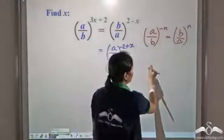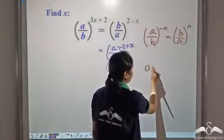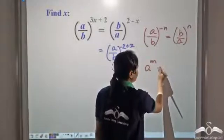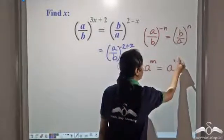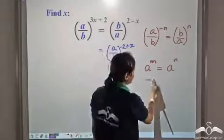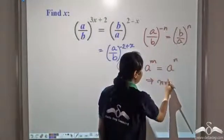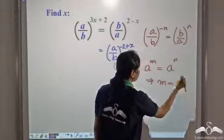We have learnt that if we have a to the power m is equal to a to the power n, then we can say that m is equal to n.